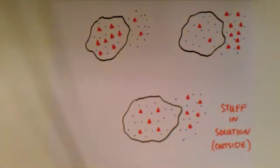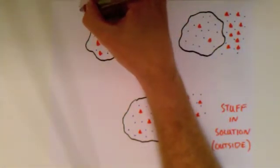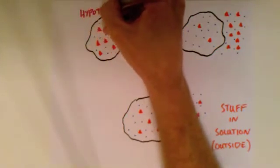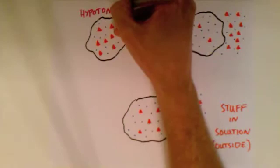In this first cell, we see that the stuff on the outside is much less than the stuff on the inside, and so this is what we call a hypotonic environment. Hypo meaning less.